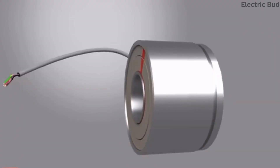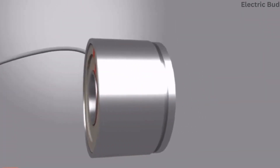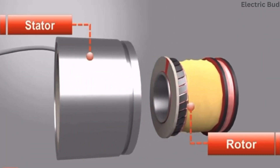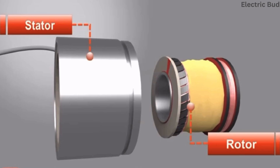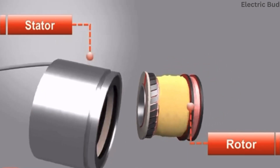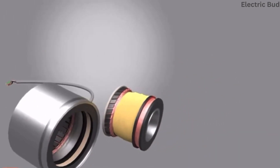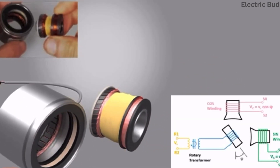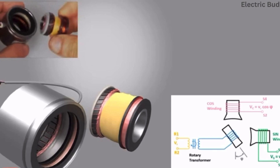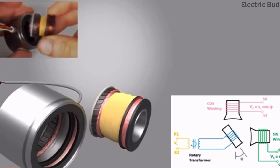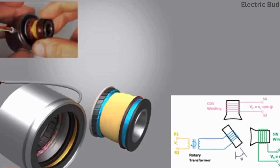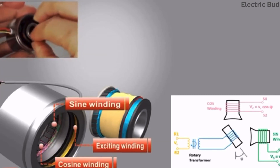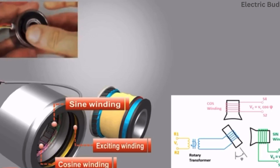The resolver consists of a stationary part called stator and a revolving part called rotor, which is attached to the motor shaft. The primary winding of the stator is connected to a high frequency sine signal.